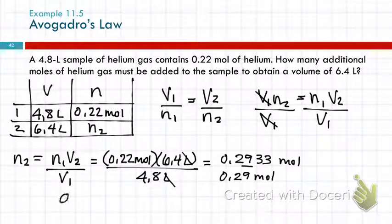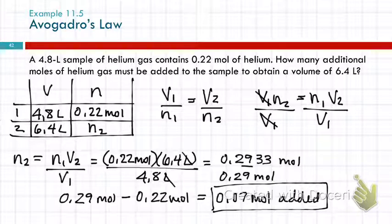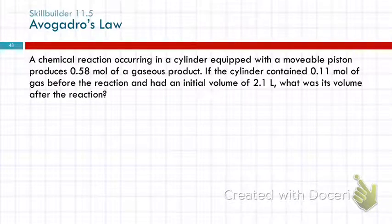So we're going to take 0.29 moles, the amount at the end, and subtract how much we started with, so 0.22 moles, and that's how much needed to be added to increase the volume to the desired amount. For CHEM 3, I would consider that to be a tricky problem. It's not just straightforward calculate the thing. You have to think a little bit. Any questions? Let's do another one.